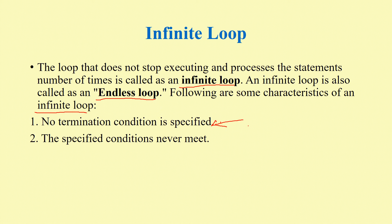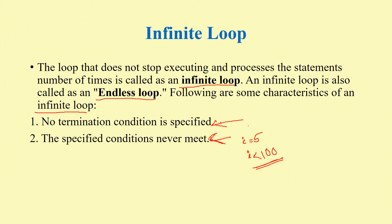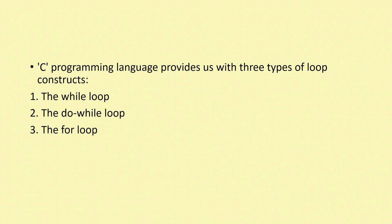If the specified condition is never met, it is an infinite loop. For example, if I is equal to 5 and the condition is I less than 100, but I never increments, the condition is never met. In two cases, we will specify the termination condition. We will learn three types of loops.